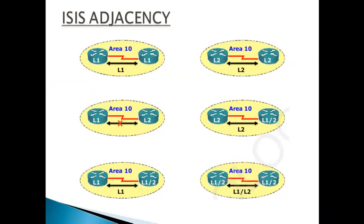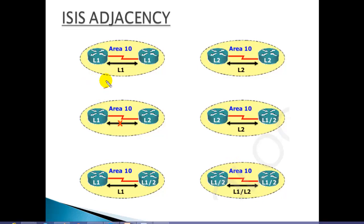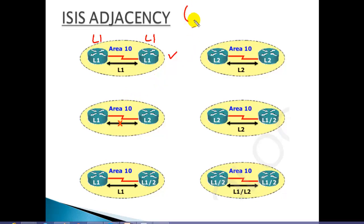The next thing we need to understand is the different adjacency behaviors of our routers. For example, if you have a router which is Level 1 and another which is Level 1, and both are in the same area, they will automatically form the neighborship. This is very important to understand, especially when you are troubleshooting.